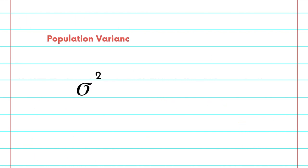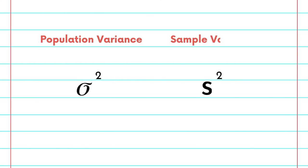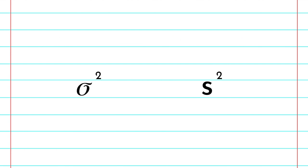The symbol for population variance looks like this: sigma squared. However, it's also common to see additional symbolic representations like s squared if you're solving for the sample variance.